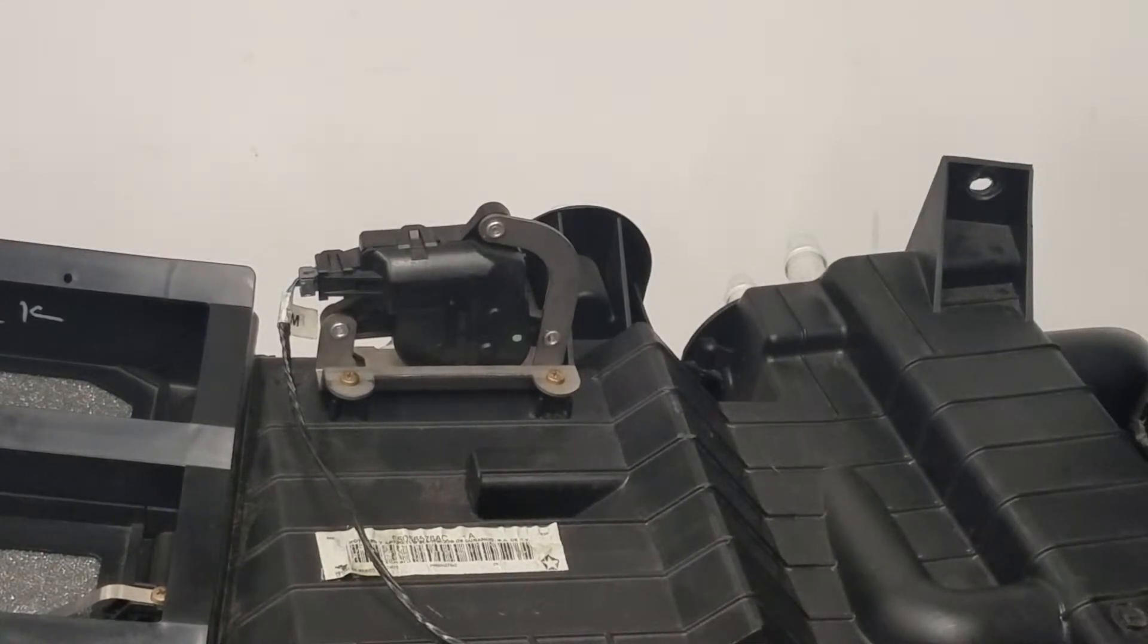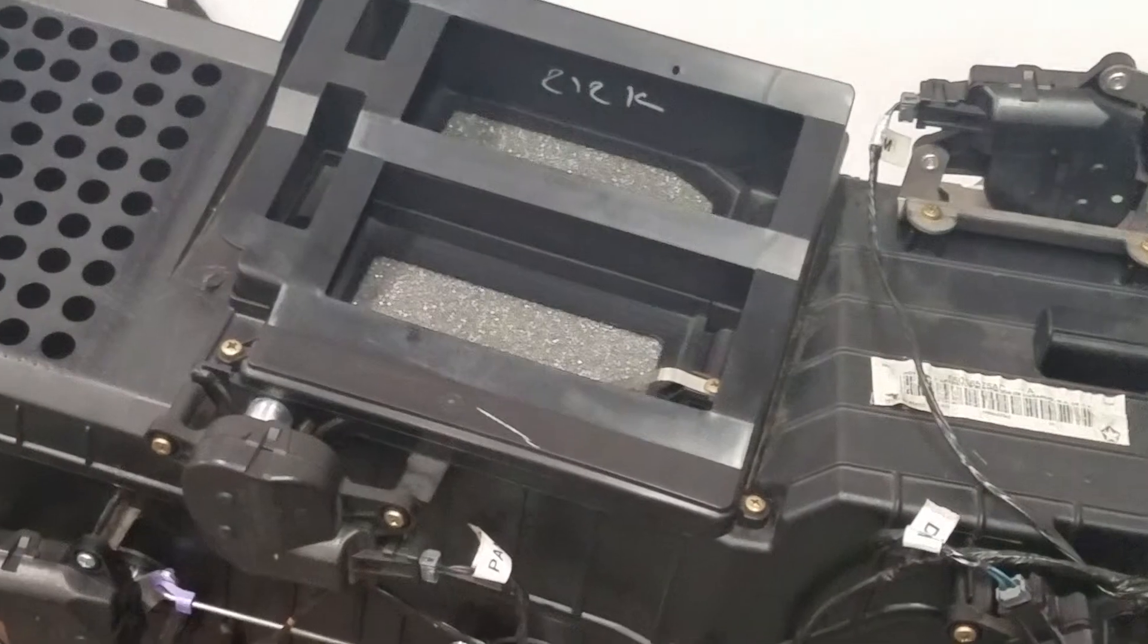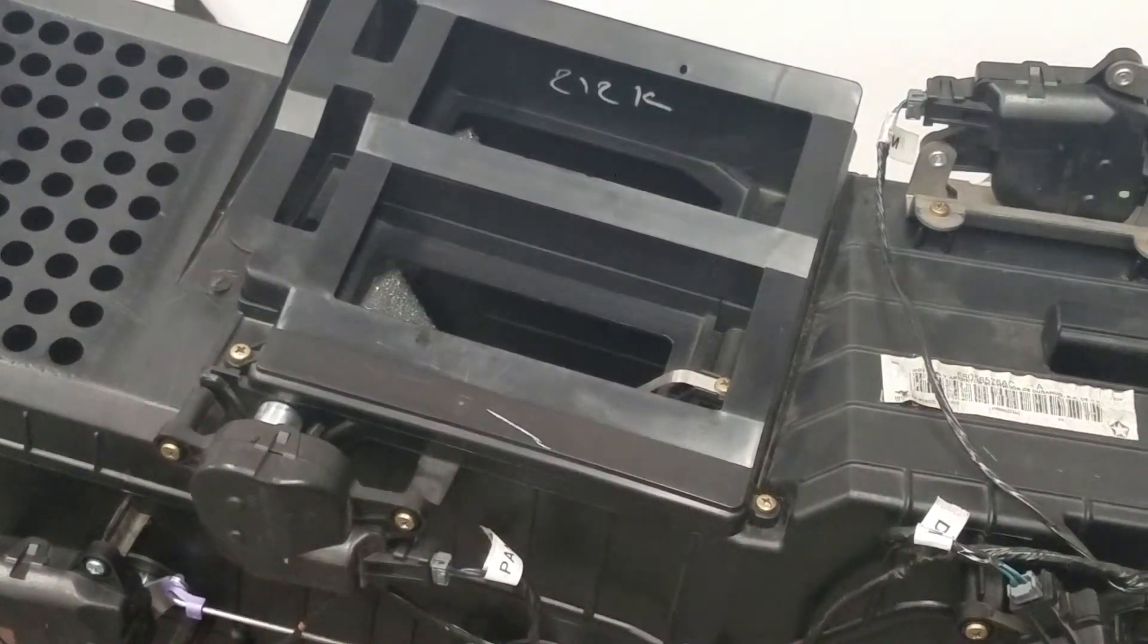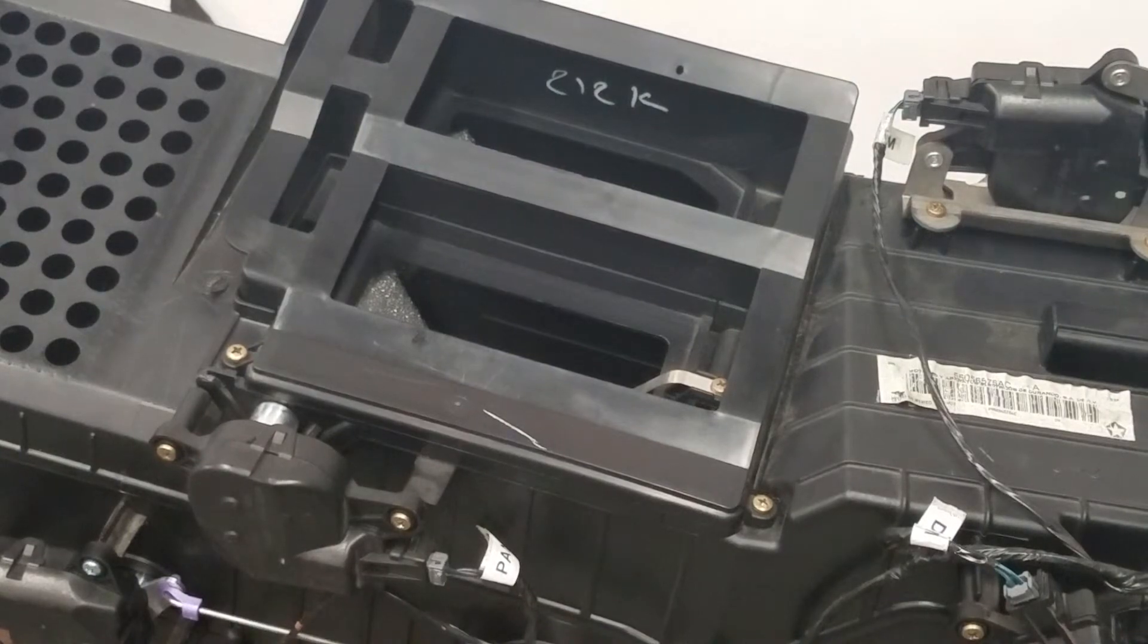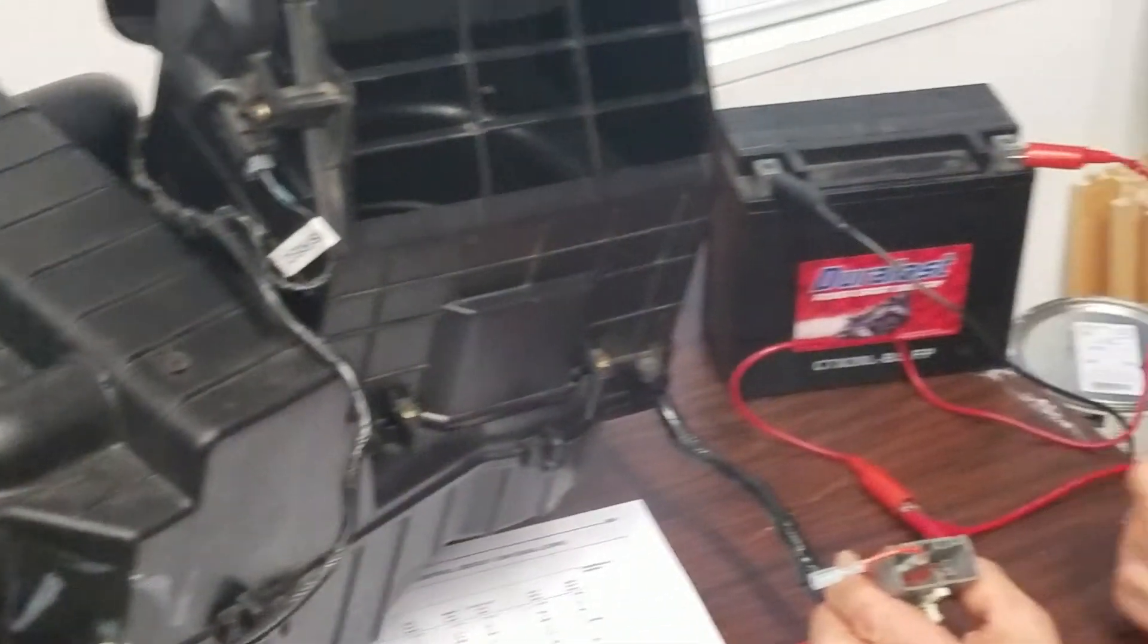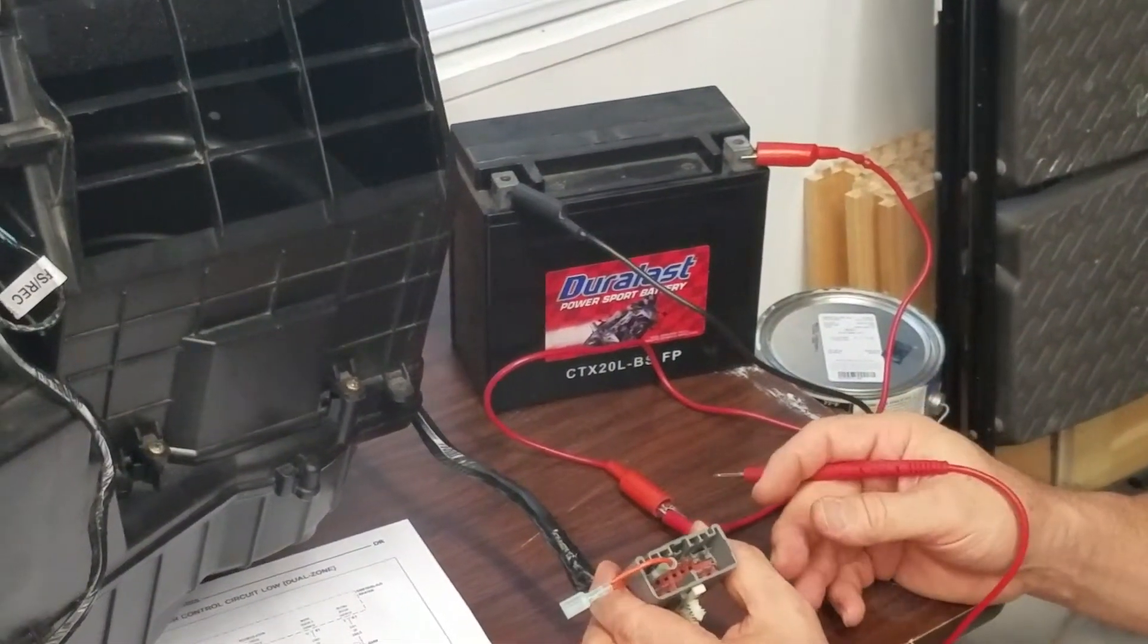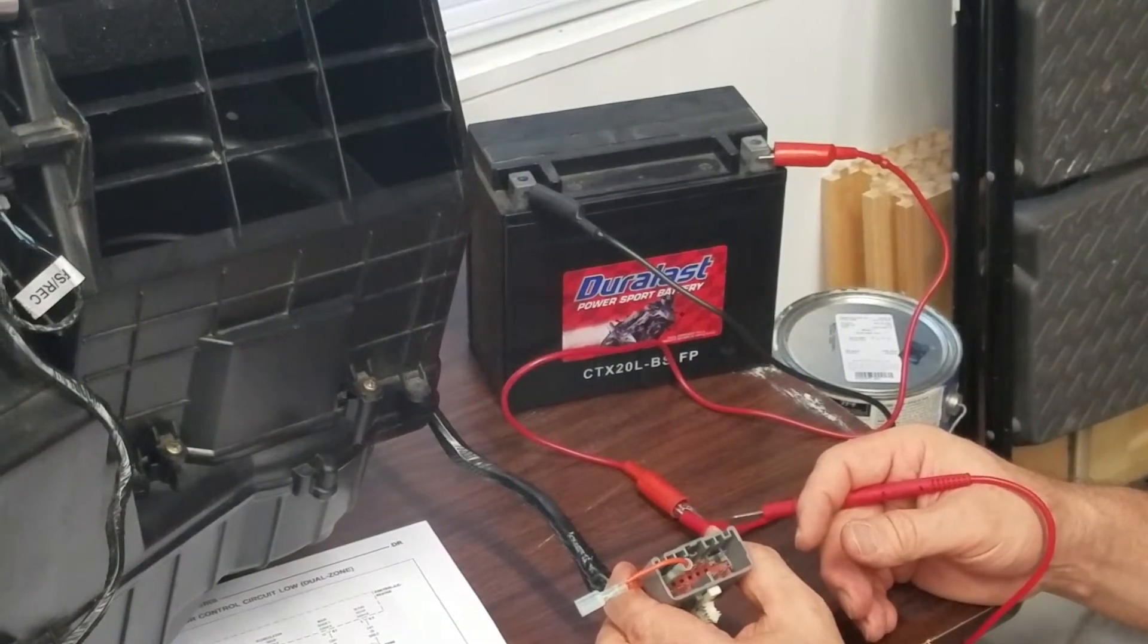Okay and then the last one is mode door 1 on top here. If I want to switch the battery terminals I can cycle back through the doors in the other directions. I've already done that so that's the end of the test. Thanks for watching.